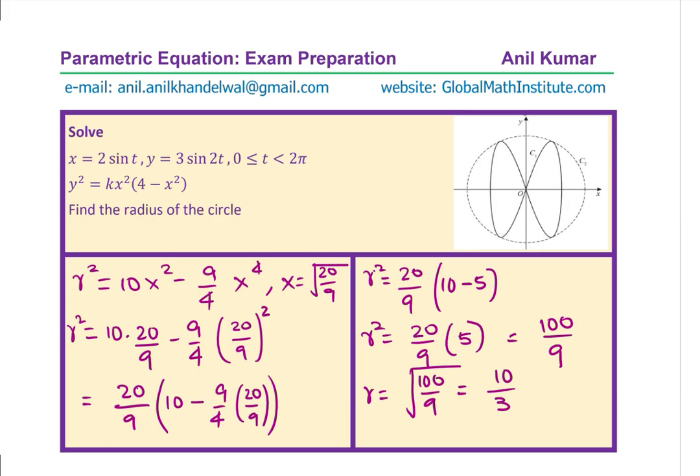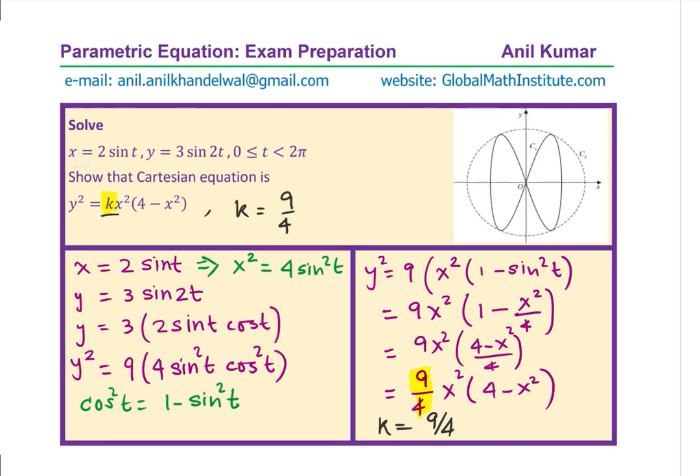That is how you can find the radius of this given circle. A lot of steps involved here. Let us summarize the solution. We began with the parametric equation x equals to 2 sine t, y equals to 3 sine 2t, where t is between 0 to 2π. To write it in a Cartesian form, we expanded sine 2t with 2 sine t cos t and then squared the given equation to get relation of x² with sine² t and that was utilized to substitute the values. Simplifying, we got a result with k equals to 9 over 4.